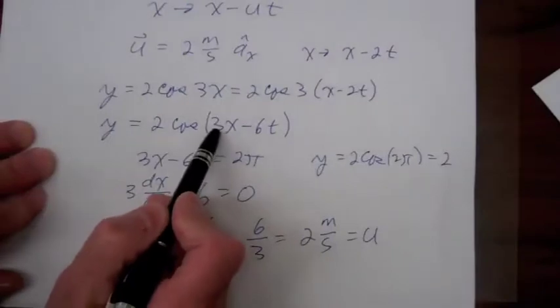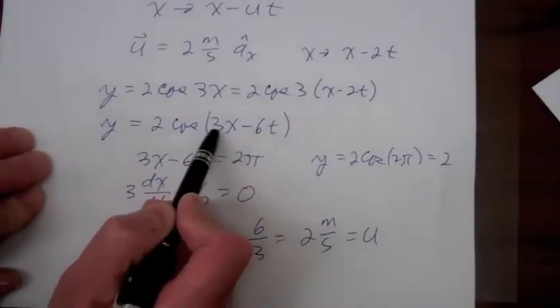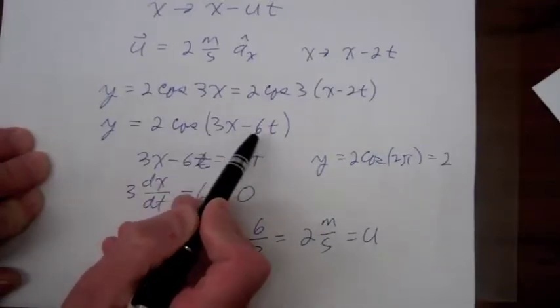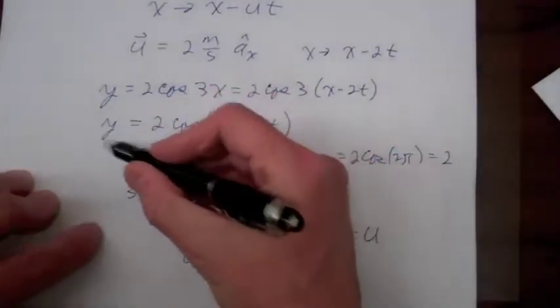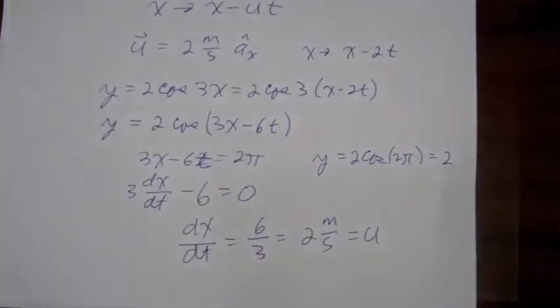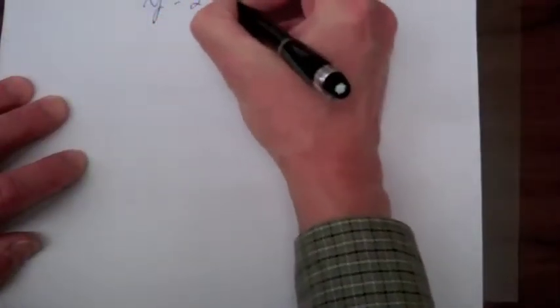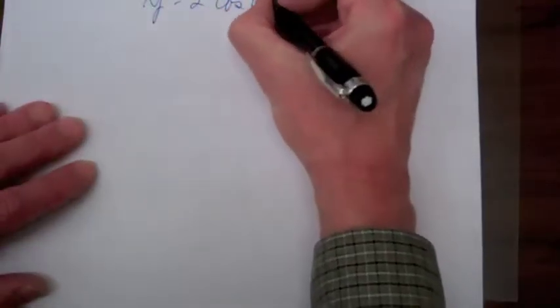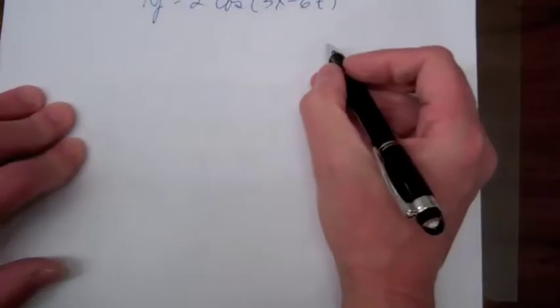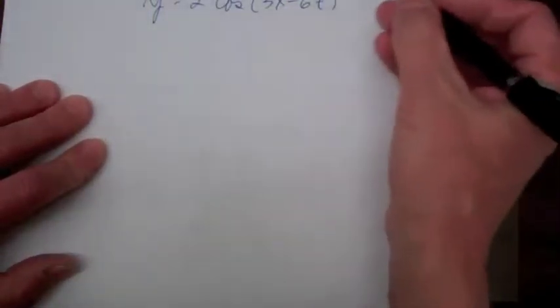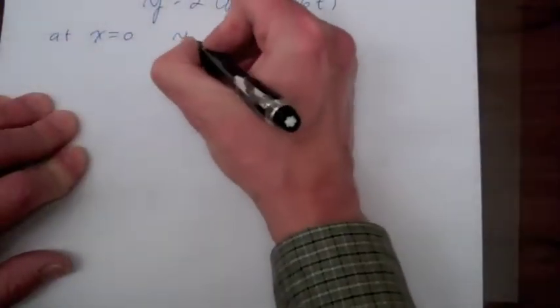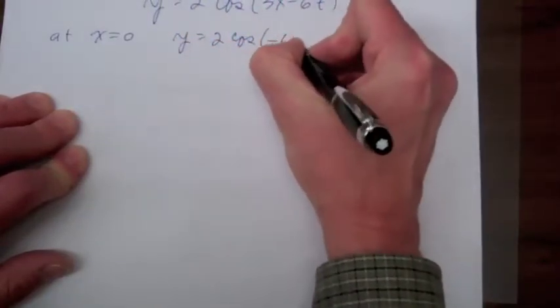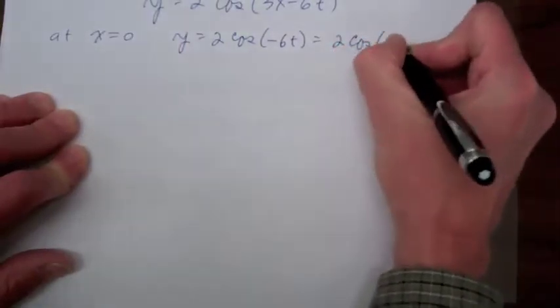We saw the significance of the constant multiplying x — that's the beta for our wave. Now let's look at the significance of the constant multiplying time. Rewriting our function for the traveling wave as y = 2cos(3x - 6t), let's look at the behavior of that wave at one particular position, x = 0.